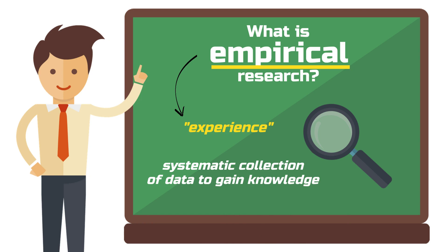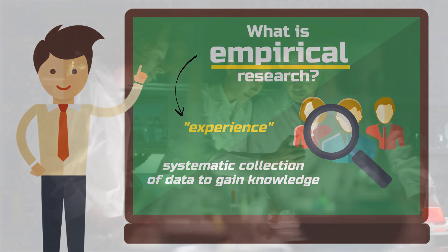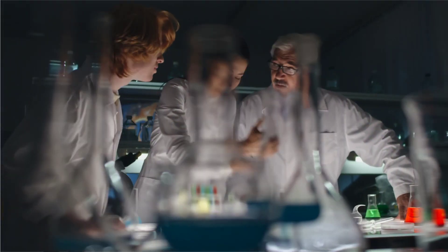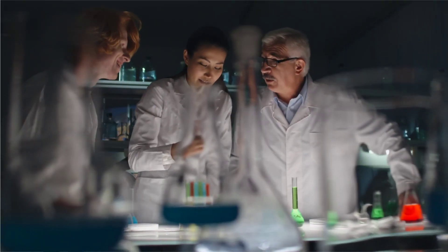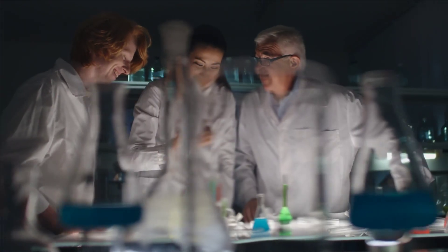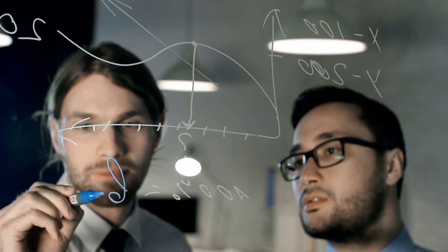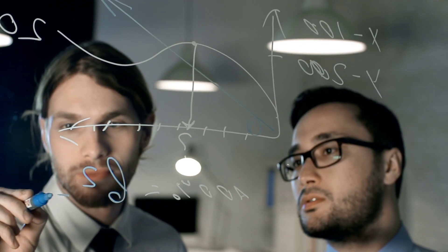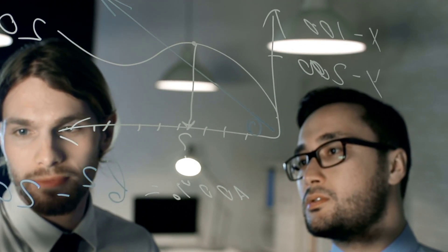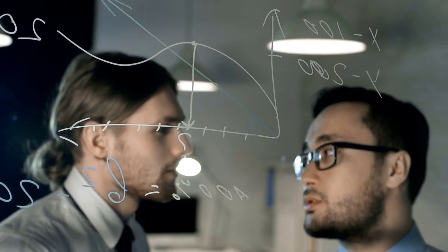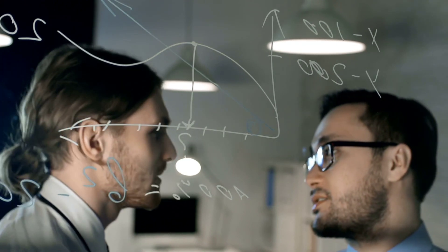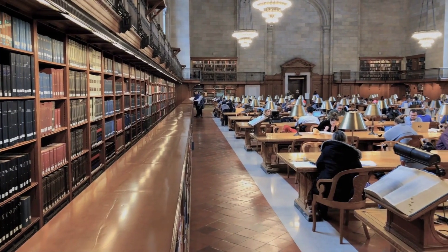This always involves some sort of observation in the real world or engagement with real people. For example, social sciences, but also the natural sciences, are dominated by empirical research. In contrast, research by a mathematician or philosopher, who reaches insights only by thinking and logical reasoning, is not considered empirical. That does not mean one is better or more scientific than the other — they are just different ways to gain knowledge.